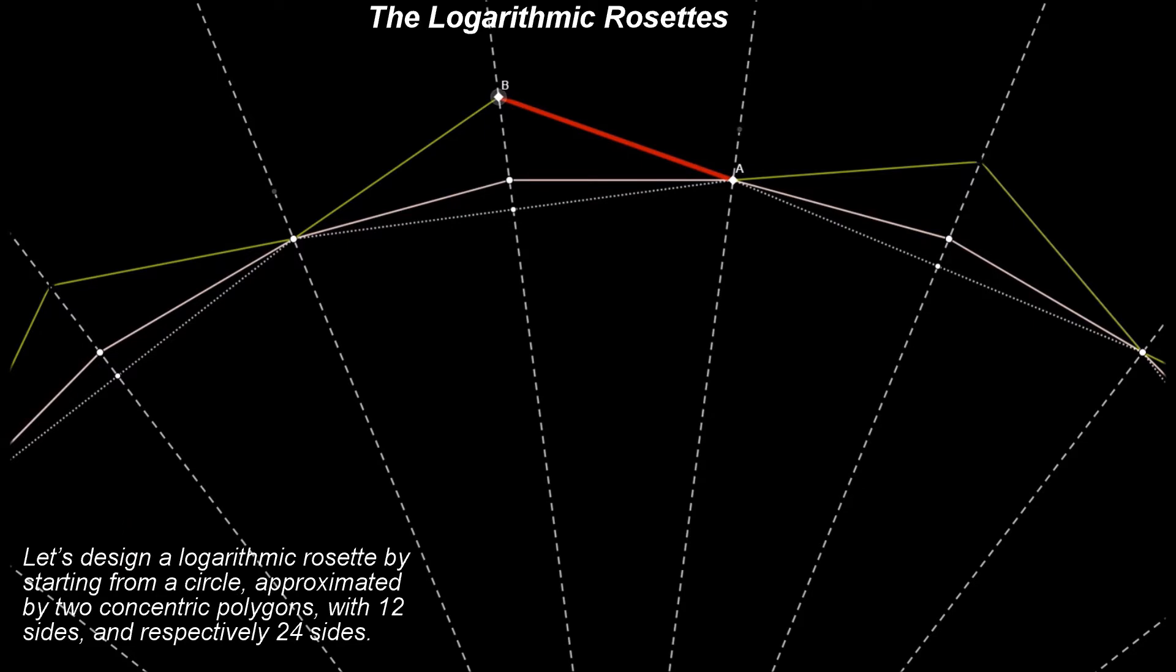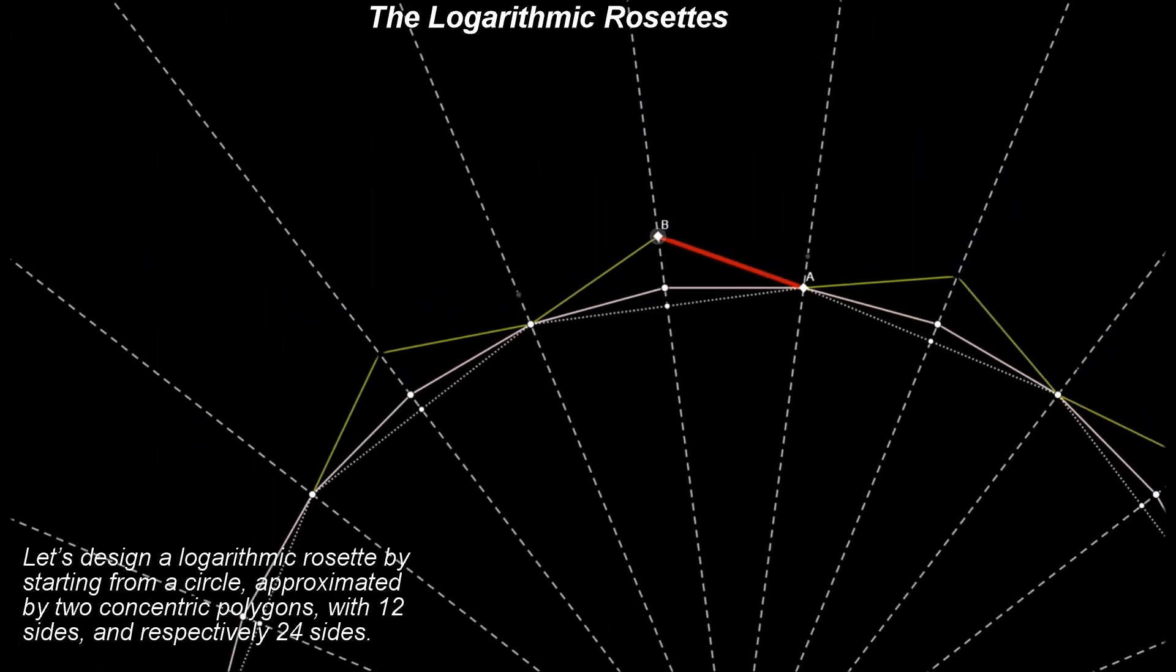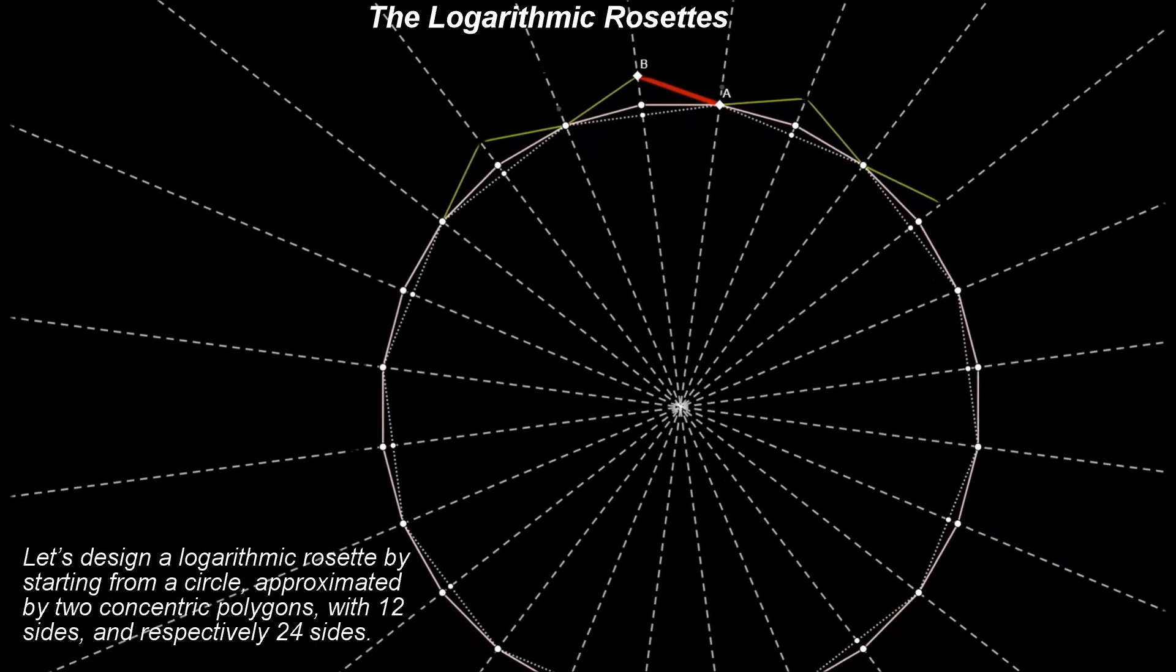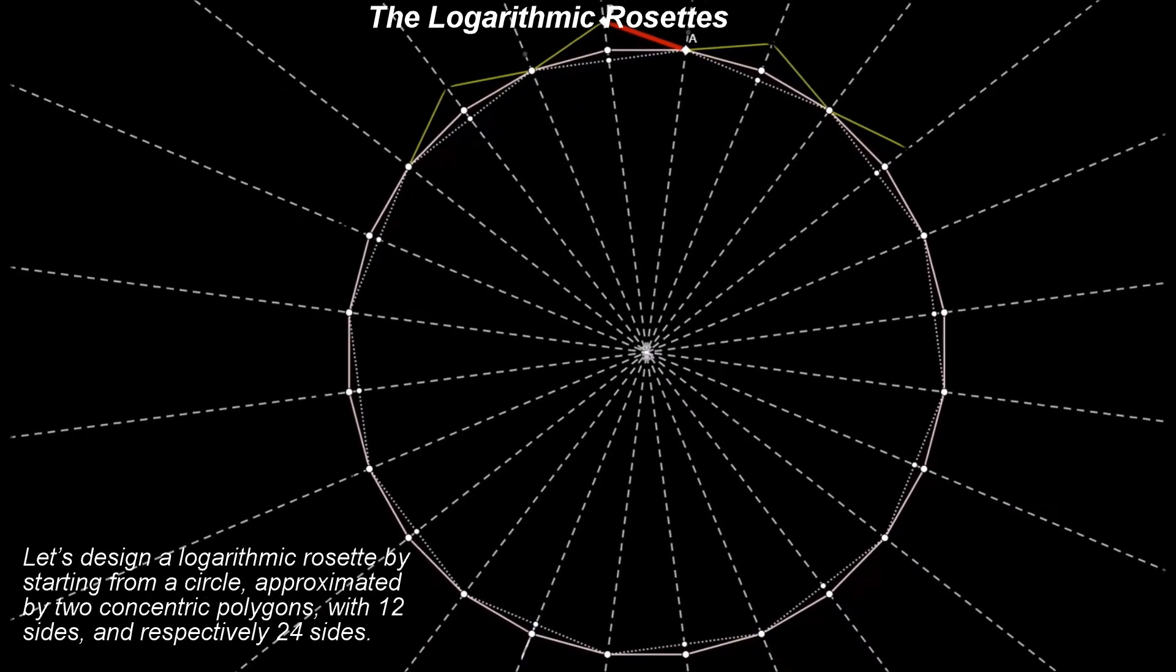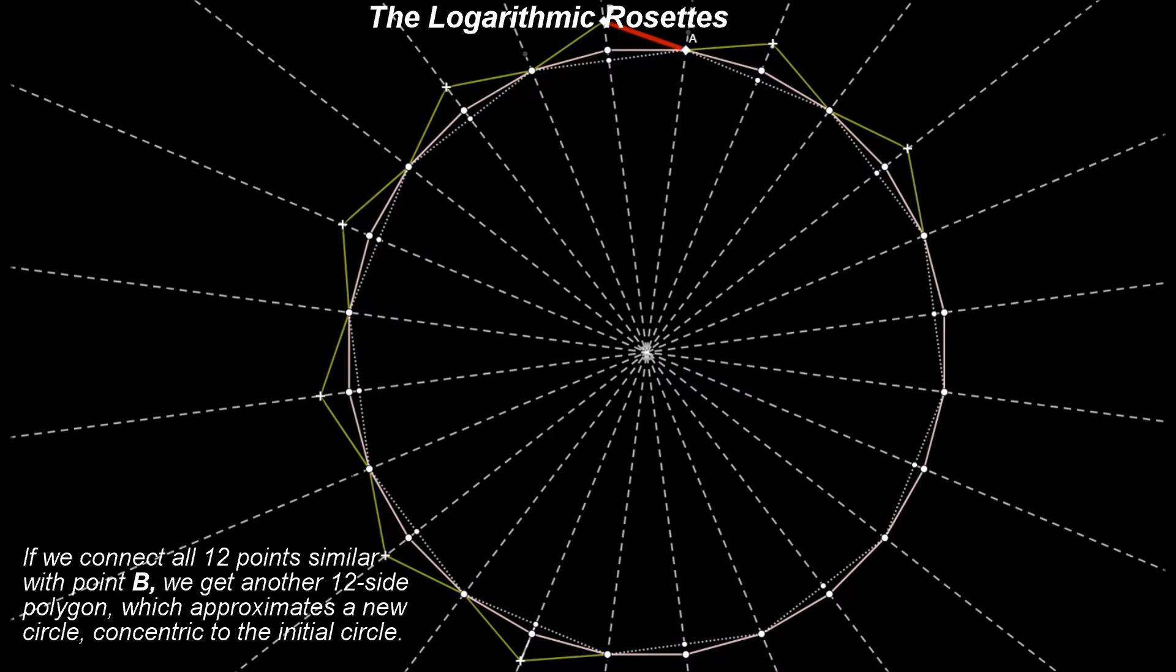As an example, let's design a logarithmic rosette by starting from a circle approximated by two concentric polygons with 12 sides and respectively 24 sides. Point A is one of the 12 intersection points of these two polygons. The location of point B is selected at this stage of the design, and its location will dictate the rate of growth of the logarithmic spiral.